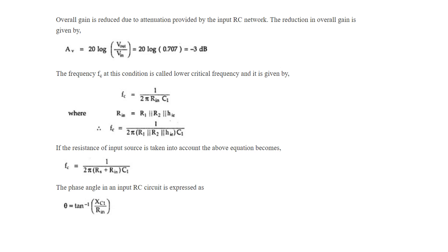The frequency fc at this condition is called the lower critical frequency and it is given by fc = 1 / (2π × Rn × C1), where Rn = R1 ∥ R2 ∥ hie. If the resistance of the input source is taken into account, the equation becomes fc = 1 / (2π × (Rs + Rn) × C1). The phase angle in an input RC circuit is expressed as θ = tan⁻¹(Xc1 / Rn).